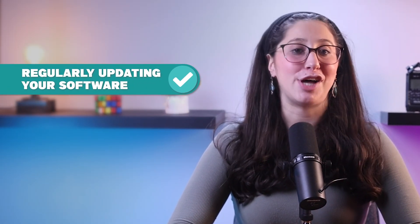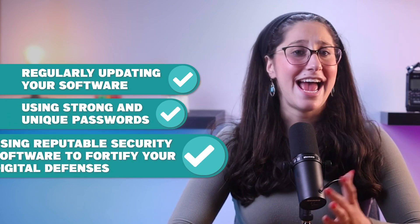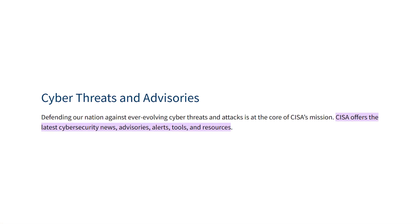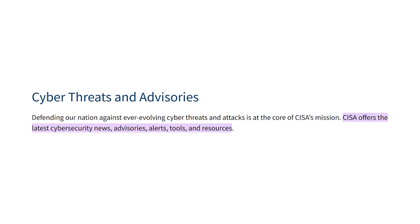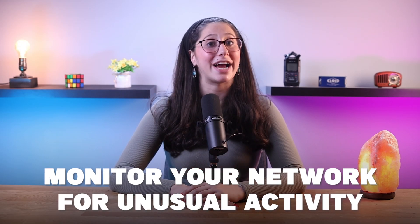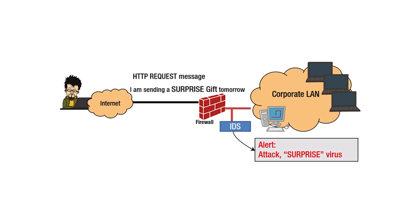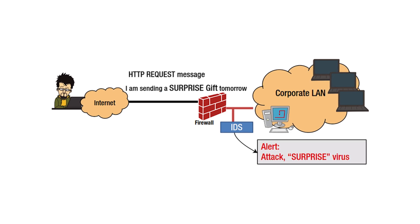Now, let's talk about how you can protect your personal privacy in the face of this growing threat. First of all, try to adopt proactive cybersecurity measures, such as regularly updating your software, using strong and unique passwords, and using reputable security software to fortify your digital defenses. Awareness also plays a big role — understanding the dangers of malware and how it can affect your personal privacy is just as important, so try to stay informed about the latest threats and vulnerabilities, and educate your friends and family to do the same. Lastly, try to continuously monitor your network for unusual activity. Intrusion detection systems and network traffic analysis tools can help you detect and respond to any suspicious behavior quickly, so you can identify potential threats before they become major issues.